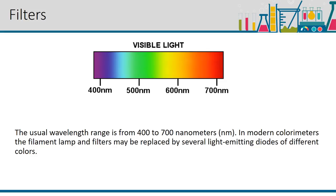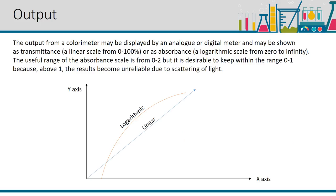The output from a colorimeter may be displayed by an analog or digital meter and may be shown as transmittance, a linear scale from 0 to 100 percent, or as absorbance, a logarithmic scale from 0 to infinity. The useful range of the absorbance scale is from 0 to 2, but it is desirable to keep within the range 0 to 1 because above 1, the results become unreliable due to the scattering of light.